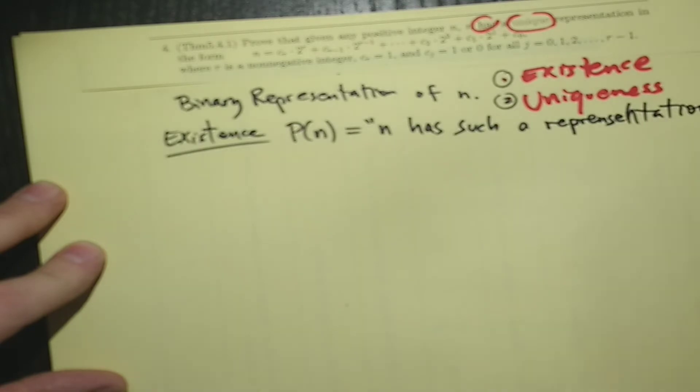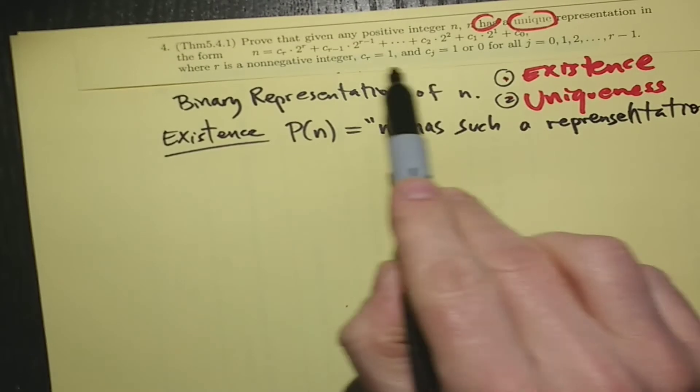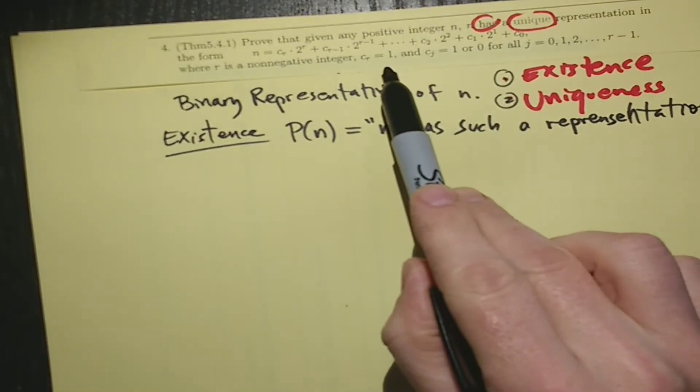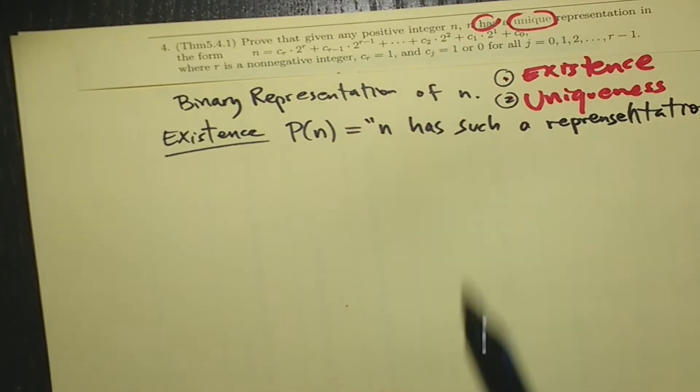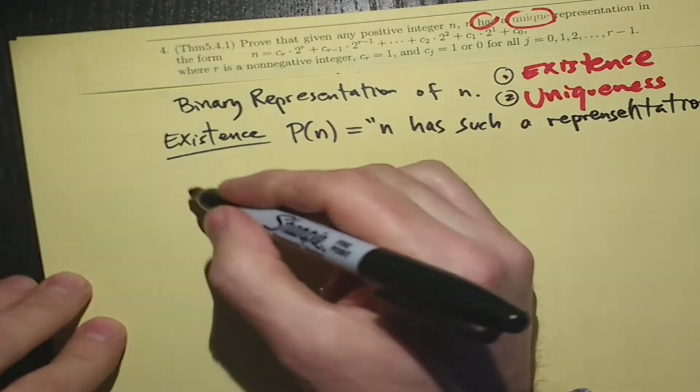Okay, here we go. And that's how it's written. Each of the bits is 1 or 0. The first one has to be a 1. And we have decreasing powers of 2. We'll be using strong induction.